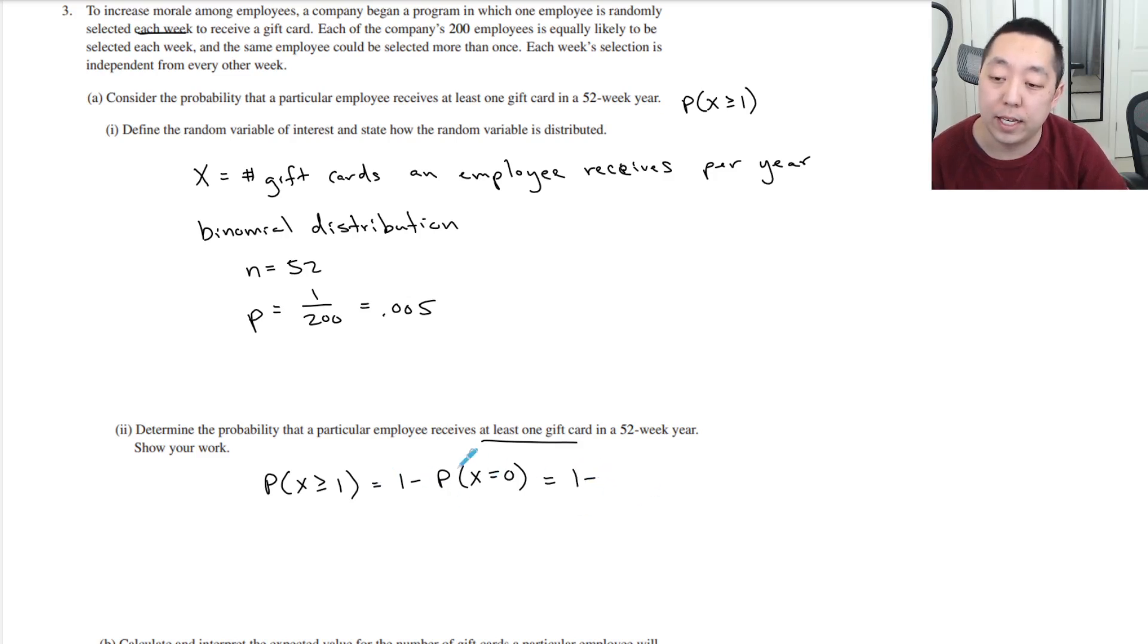So you could do the complementary. The probability that he gets no gift cards is just he doesn't win. Each one is independent, 199 over 200. And all 52 weeks, he doesn't win any of them. The probability that he doesn't win the gift card is 199 out of 200, and he does that for 52 weeks straight. So doing this calculation, I get 0.2295.